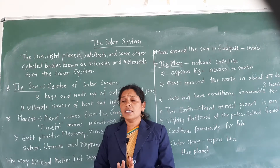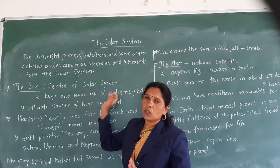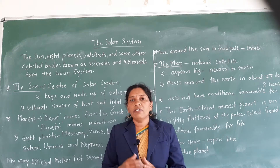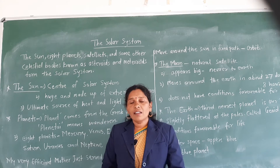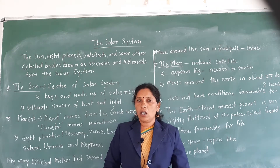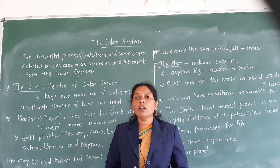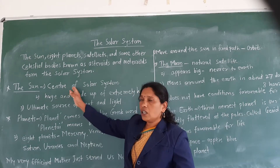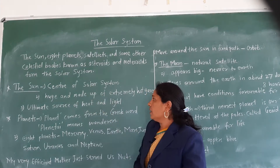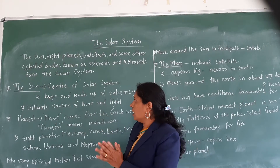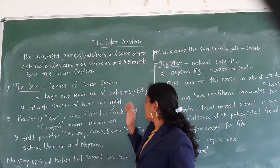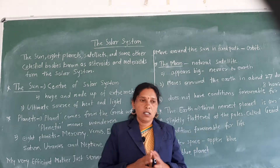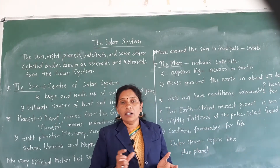The sun is the center of the solar system. If the solar system is our family, then the sun is the head of that family. The sun is a huge star made up of extremely hot gases.